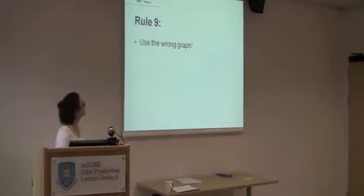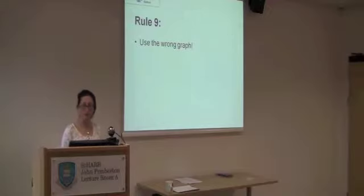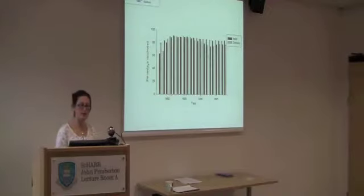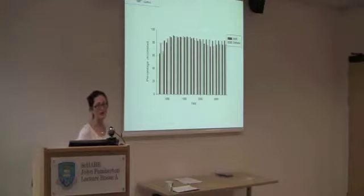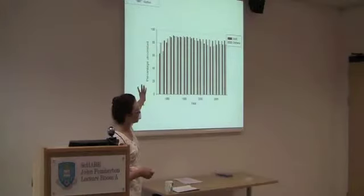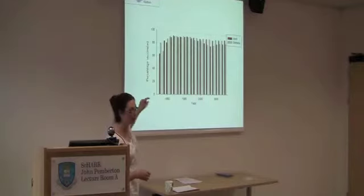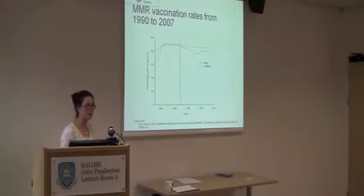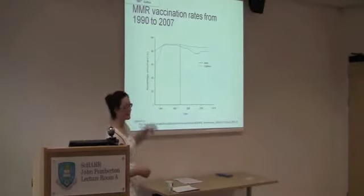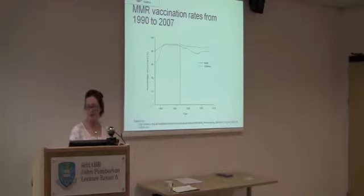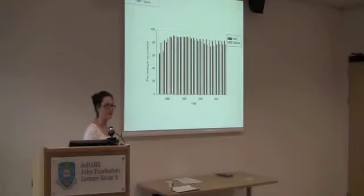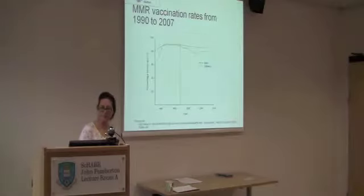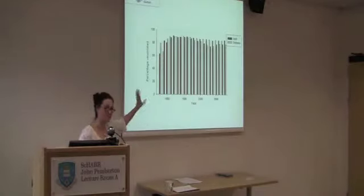Rule nine: use the wrong graph. Here with percentage vaccination, you can use a bar chart if you want, but it's quite hard to pick out what's going on. Whereas if you plot the trend lines, it's actually clearer in this case. The other thing is that bar charts use a lot of extra ink, which is unnecessary — and if we're trying to be a green university, we should be trying to cut down on ink use.